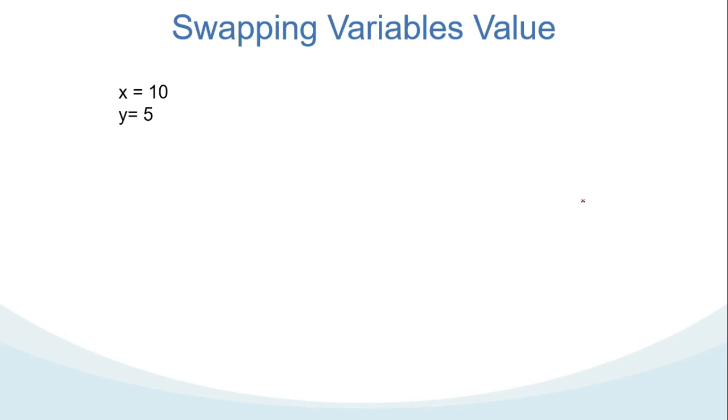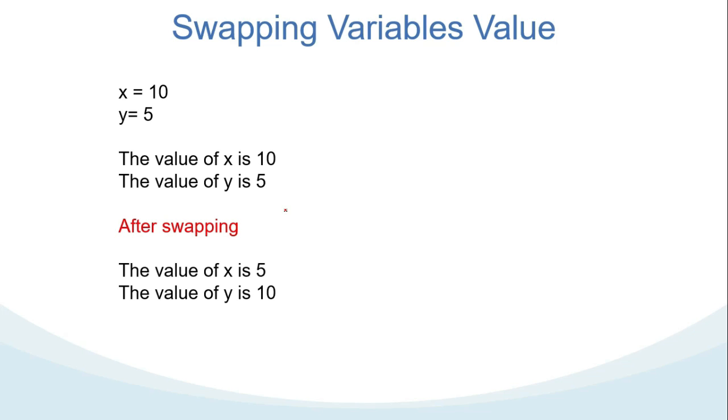Now, how about swapping variables' value like the following? We assign 10 to x and 5 to y. So when we print it in Java it will look like the following: the value of x is 10 and the value of y is 5. And if we want it swapped, then after swapping in Java it will look like the value of x is 5 and the value of y is 10.